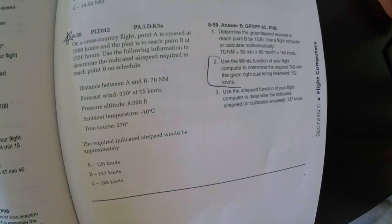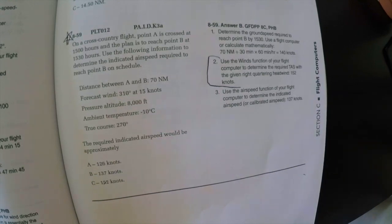Distance between A and B is 70 nautical miles. The forecast wind is 310 degrees at 15 knots. The pressure altitude is 8,000 feet. The ambient temperature is negative 10 degrees Celsius, and your true course is 270 degrees.